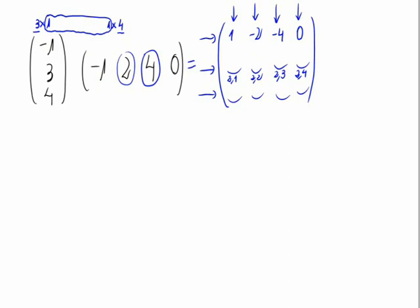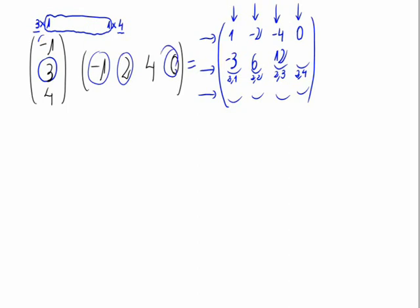Let's do the multiplications for the second line. The second line value is 3, so: 3 times minus 1 equals minus 3; 3 times 2 equals 6; 3 times 4 equals 12; and 3 times 0 equals 0.